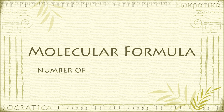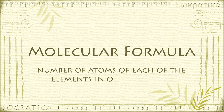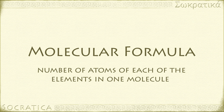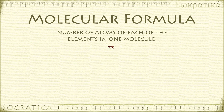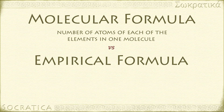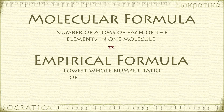The molecular formula tells you the number of atoms of each of the elements in one molecule of a compound. In a previous video, we found the empirical formula. This is a related idea, but they're not the same thing. The empirical formula gives the lowest whole number ratio of the atoms of the elements in a compound. This may or may not be the same as the molecular formula for a given compound.